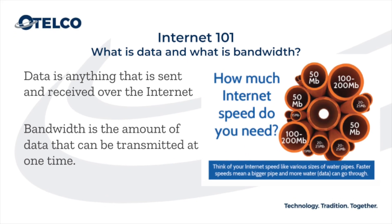What's the difference between bandwidth and data? Data is anything you send or receive over the internet, and bandwidth is the size of the pipe that the data travels through. Think of a water pipe — the bigger the pipe's diameter, the more water that can pass through. The capacity of a water pipe is measured in gallons per minute, while the capacity of an internet connection is measured in amounts of data per second.